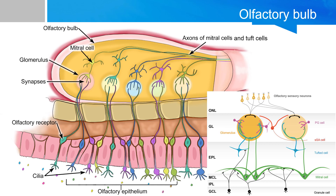The olfactory sensory neurons expressing the same type of odorant receptor will converge their axons into only a few glomeruli. Thus, each glomerulus represents a single type of odor. For the purpose of the board exam, know that the olfactory receptor neurons — the primary sensory neurons — synapse with two types of projection neurons called the mitral cells and the tuft cells, which are the secondary neurons.